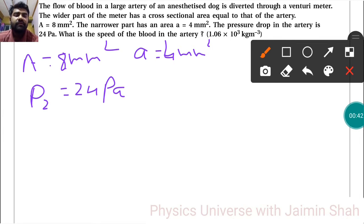This is the pressure drop, 24 pascal. It is actually P1 minus P2, that is the difference. Now the formula to find this - this is a venturimeter, so the venturimeter formula is fixed.